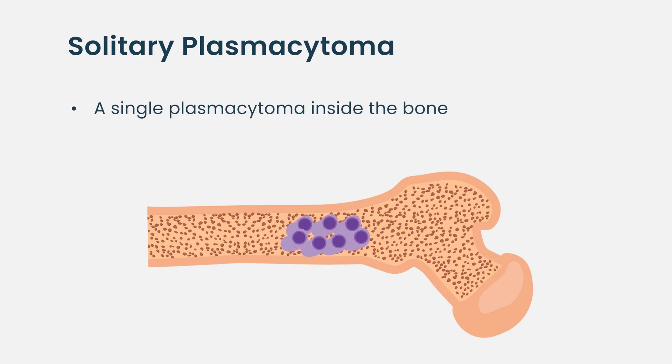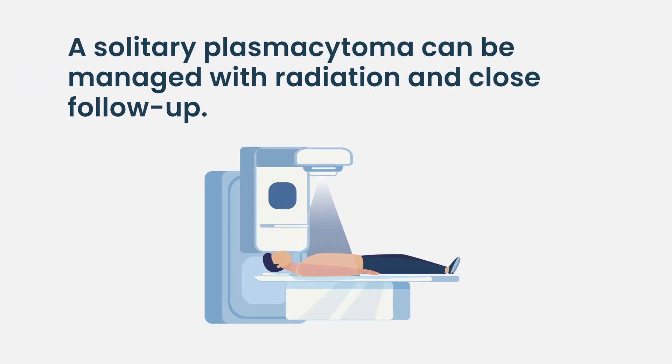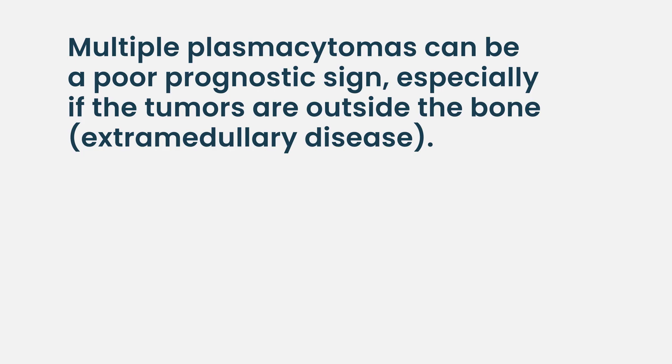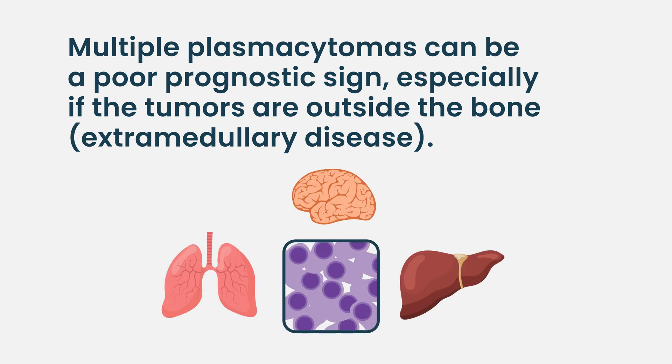It's sometimes not that serious if you only have one plasmacytoma and nothing else. A single plasmacytoma inside the bone is called a solitary plasmacytoma, and those can often be treated conservatively with local radiation and close follow-up. However, multiple plasmacytomas — especially recurring ones that pop up outside the bone in organs like the liver or skin that don't normally contain plasma cells — can be a bad prognostic sign and are often difficult to control.